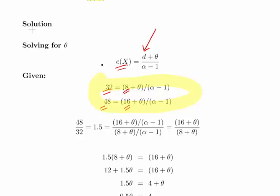What I'm going to do is divide one expression by the other. So I have 48 divided by 32 that's equal to 1.5 and that is equal to 16 plus theta divided by alpha minus 1 divided by 8 plus theta divided by alpha minus 1 which is 16 plus theta divided by 8 plus theta.